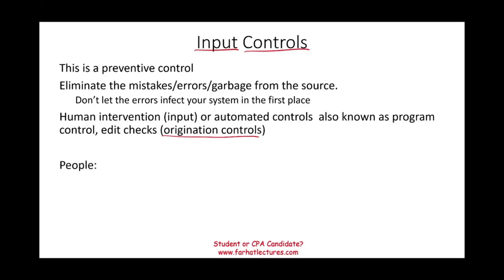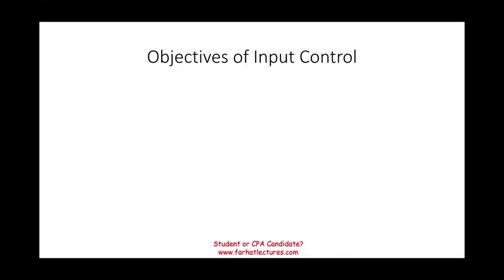Why are people not as good as computers? People can make judgments, but when it comes to making errors, people get tired — computers don't. Programs don't get tired once they are programmed properly. People get lazy, lose motivation, or might be having a bad day. For all these reasons, if you can find a way for the IT system to prevent errors from happening, you would let the system do it. Technically, we are relying on a computer system to have input control.